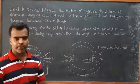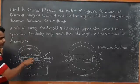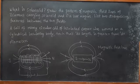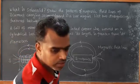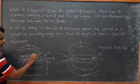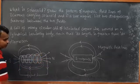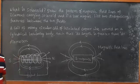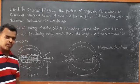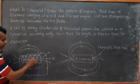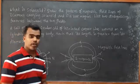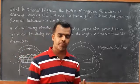Now let's draw the field lines. This is the number of turns — 1, 2, 3, 4, 5. In this turn, we will produce a magnetic field. In this magnetic field, we will produce a uniform magnetic field.